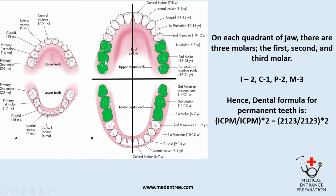Then come the molars. On each quadrant there are three molars: the first molar, second molar, and third molar. So M equals 3. ICPM stands for incisor, canine, premolar, and molar. The lower ICPM represents the lower jaw, and the formula is multiplied by two to account for both the right and left halves.